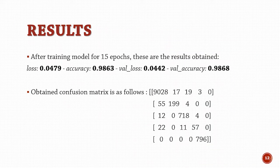The model was trained for 15 epochs and achieved an accuracy of 98.63% with a validation accuracy of 98.68%. Both these accuracies being so similar is essential to ensure that the results will be just as accurate in future predictions also.